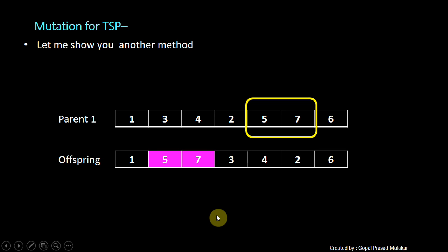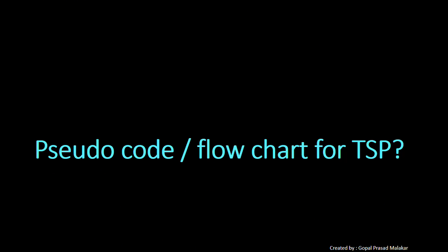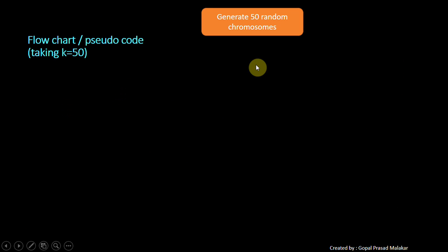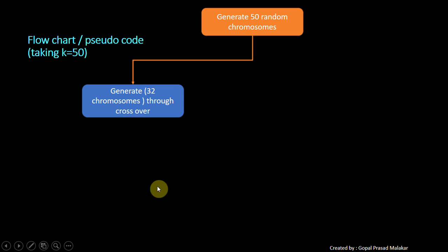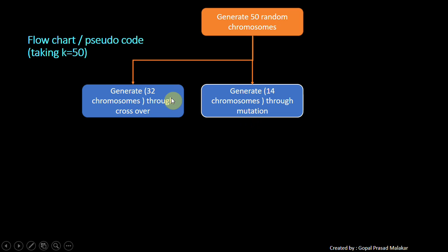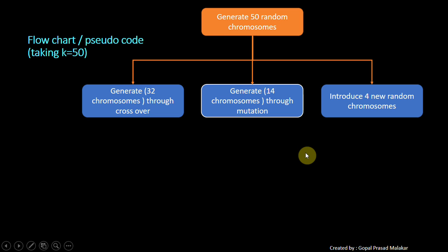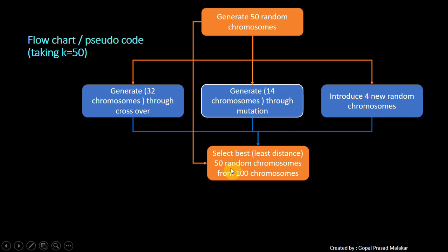That's how you do crossover and mutation. Let me recap everything so you can understand the complete flow of how to solve TSP. You start with initial K chromosomes. Let me take K equal to 50 so you can relate better. You started with 50 chromosomes means 50 solutions. Then you generated 32 chromosomes through crossover, 14 chromosomes through mutation, and 4 new random chromosomes so that you always try to infuse something new. You have 32 plus 14 plus 4, total 50.